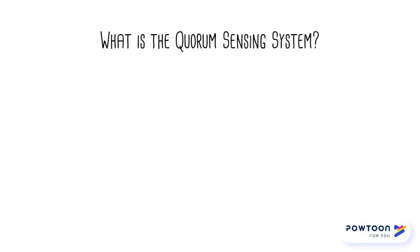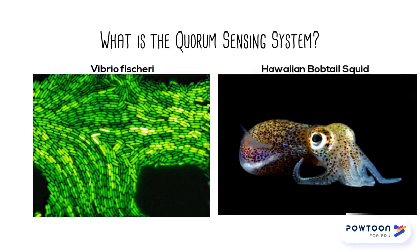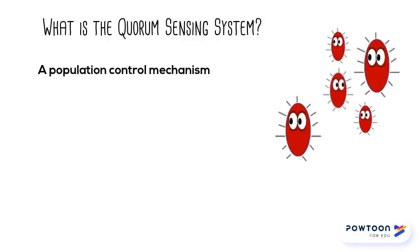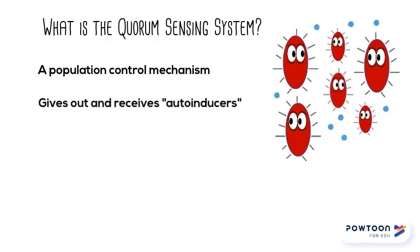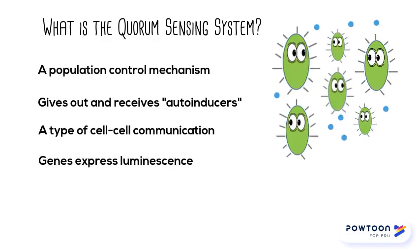First, what is the quorum sensing system? Originally described as auto-induction, the quorum sensing system was discovered in the Gram-negative marine bacteria Vibrio fischeri in the 1970s. This bacterium lives symbiotically with many marine organisms, including the Hawaiian bobtail squid, and fluoresces in high cell density environments. This system is used in nature as a population control mechanism. It is part of a signaling pathway that allows bacterial cells to detect, respond, and release chemical molecules called auto-inducers — a type of cell-to-cell communication that induces genes to luminesce in response to high cell density.